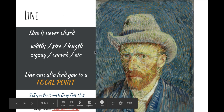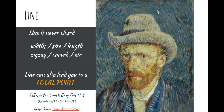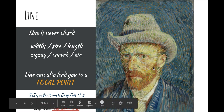Next up is line. A line's definition is it's never closed, meaning the start never meets the end of a line. Lines can come in various different widths, sizes, and lengths. They could be zigzagged, jagged, or curved, etc. Also, line can be used to direct the viewer to a focal point, and a focal point is the main area or area of interest the artist wants the viewer to go. So in this painting here, we go to his face, and we'll get more into that in a second.